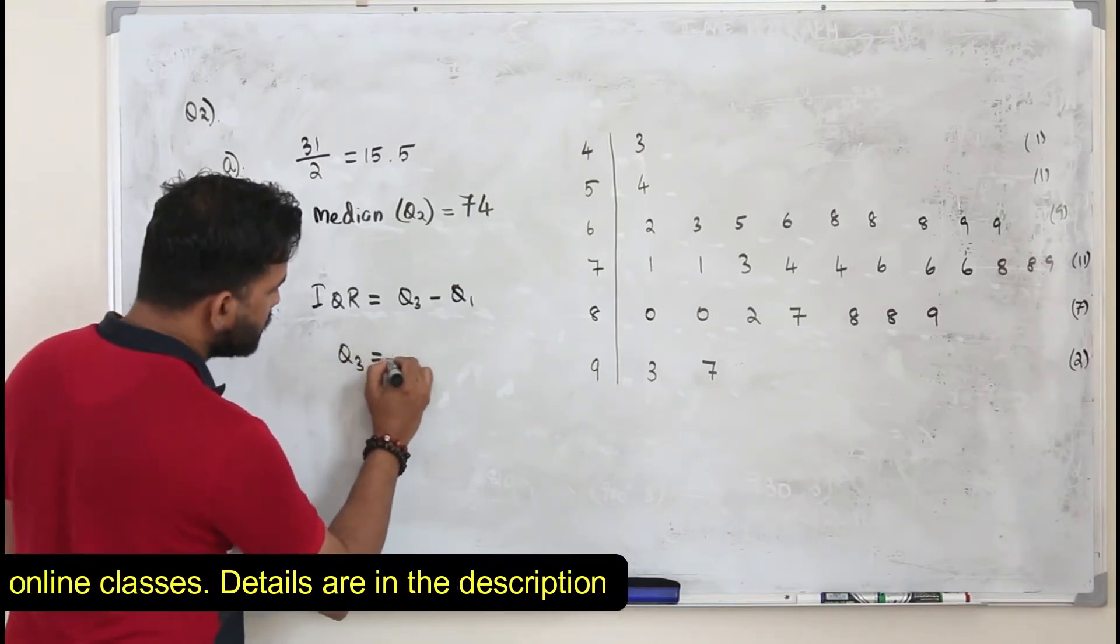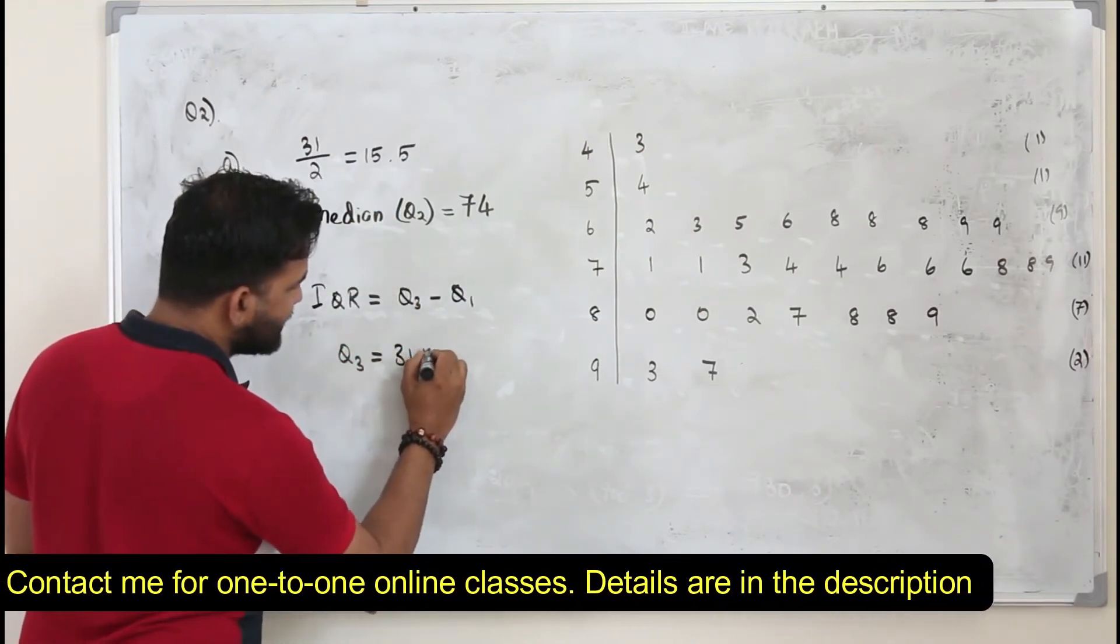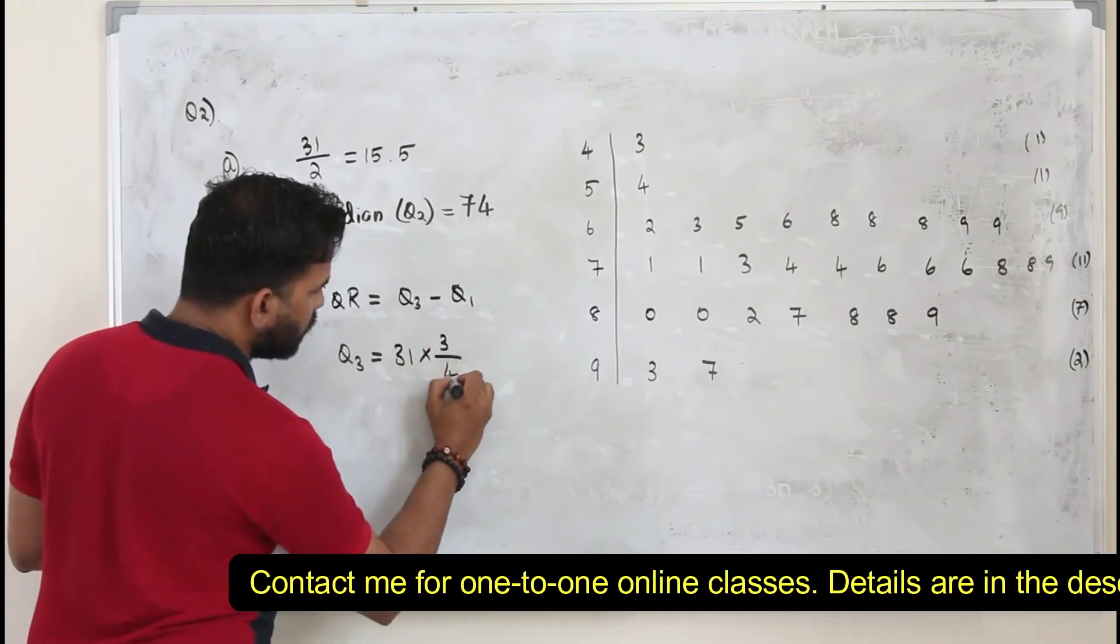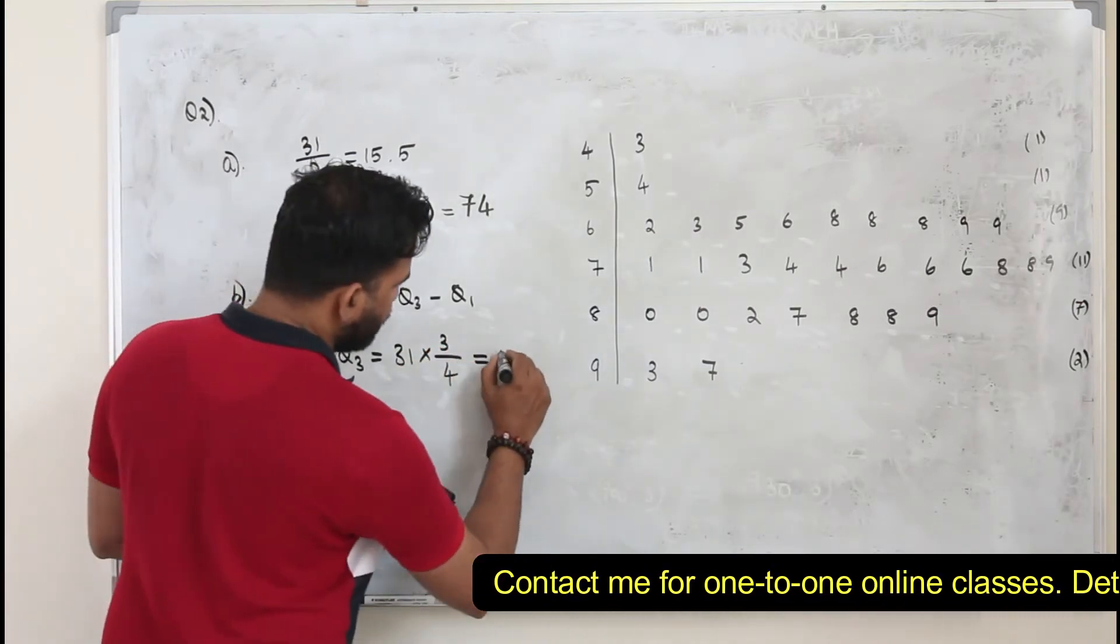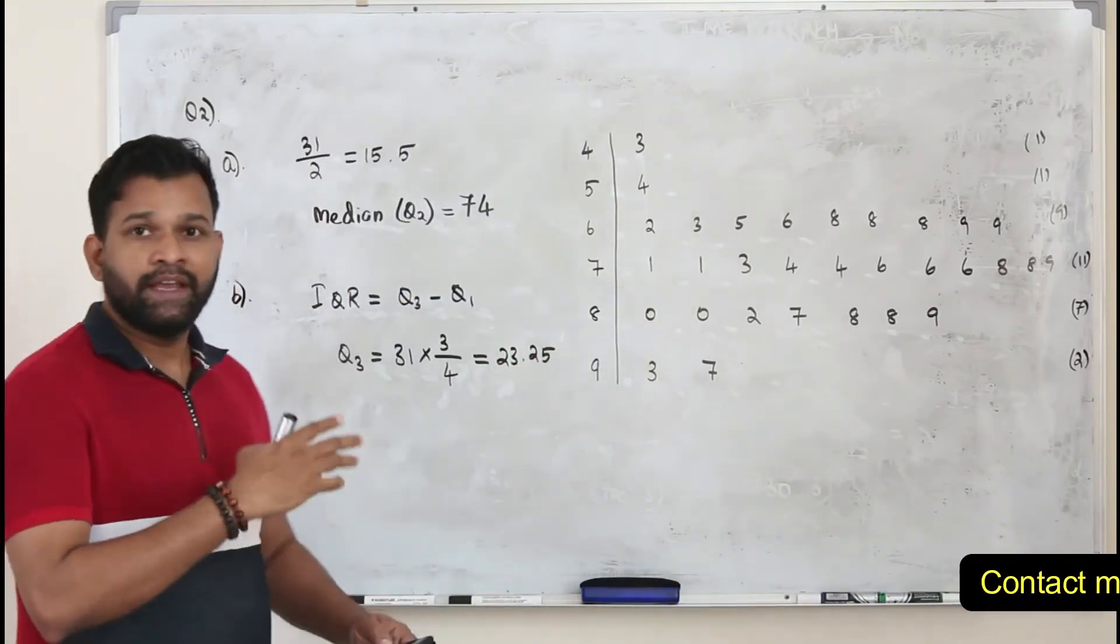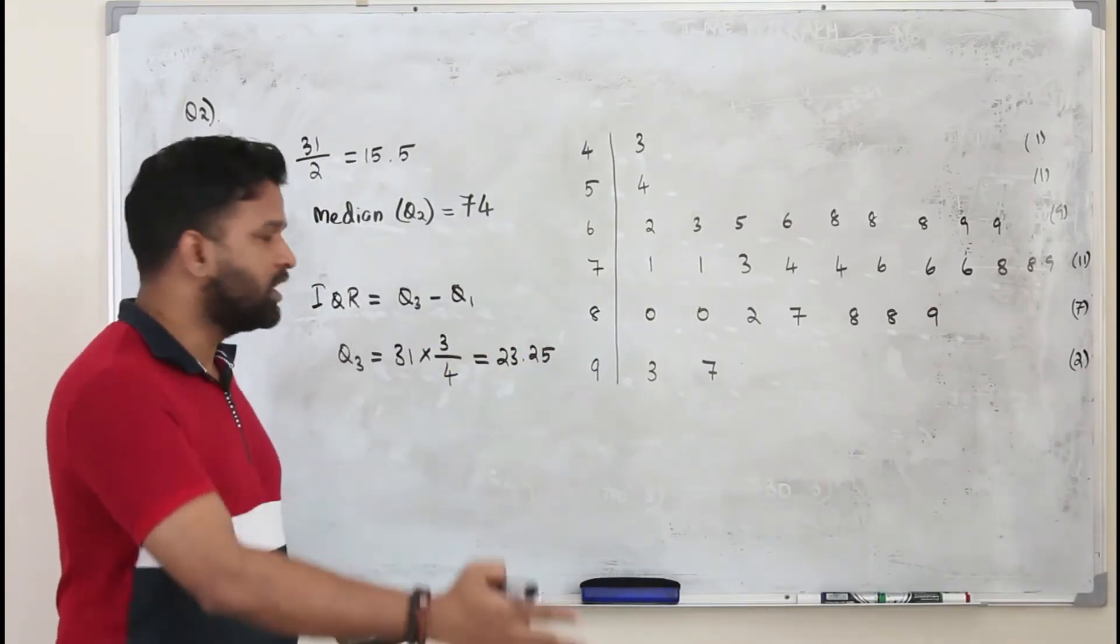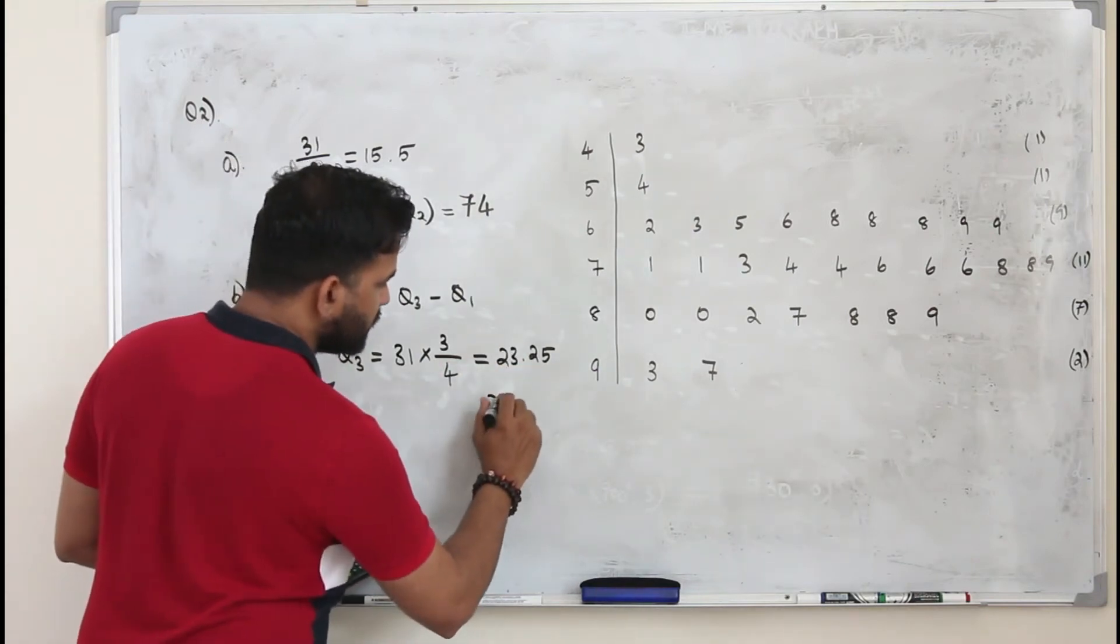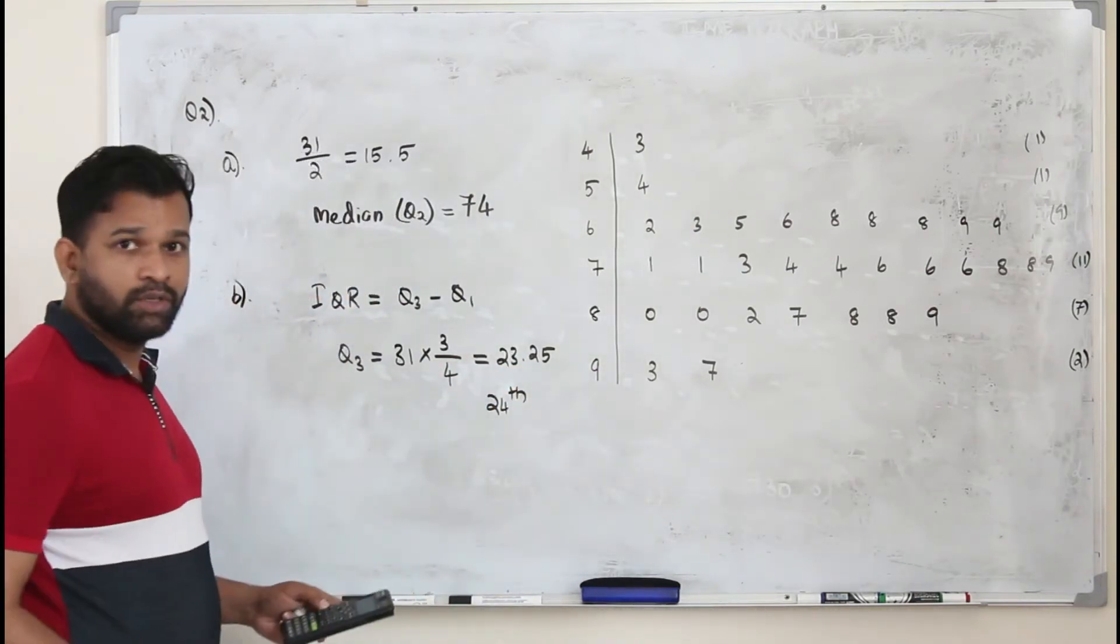Q3 is the total number of entries, 31, times 3 over 4. Get 23.25. So whenever you get a decimal number, take the next entry, 24th, and 24th entry is Q3.